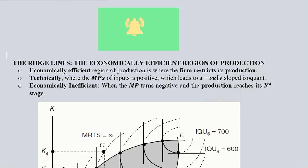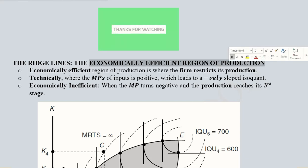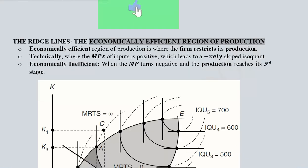Hi there, in this video we'll learn about the ridge lines, which is a concept related to the economically efficient region of production when it comes to isoquants. It is related to the shape of the isoquant that we know is a negatively sloped convex to the origin shape.